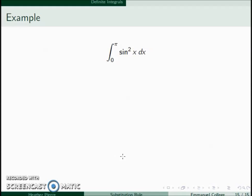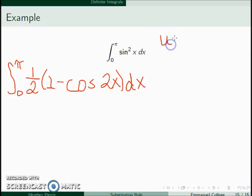This one may not be immediately obvious what u should be and what du should be, in particular because we only see a sine squared. So I'm going to rewrite this: sine squared can be rewritten as 1 half times 1 minus cosine 2x dx.